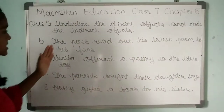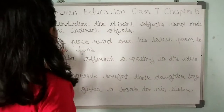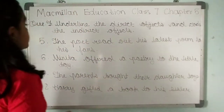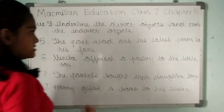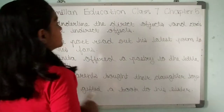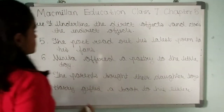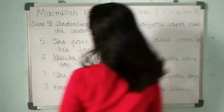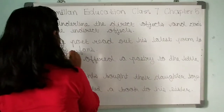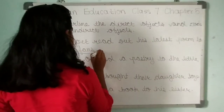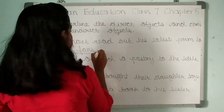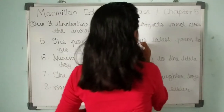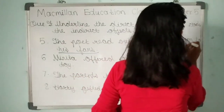Question five: 'The poet read out his latest poem to his fans.' Here, 'his fans' is the indirect object and 'his latest poem' is the direct object.